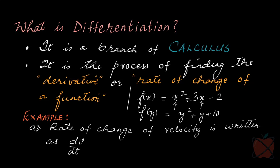You have an equation, let's say x² + 3x - 2. The only variable here is x, and 3 and 2 are called constants. So depending on the value of x, you will have different values of f(x). Similarly, you will have a function in y, let's say y² + y + 10. That is another quadratic equation having only one variable, y. So that is a function of y.